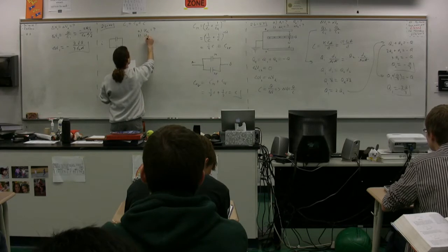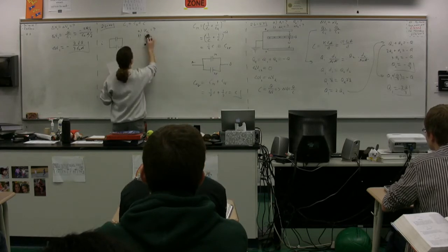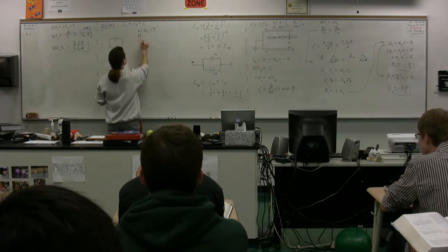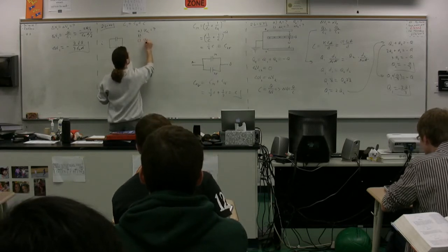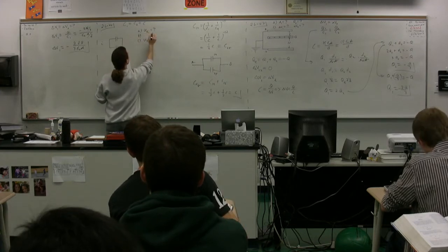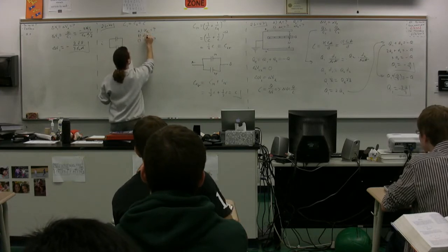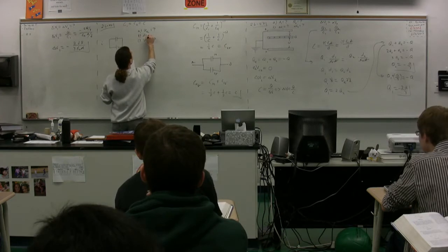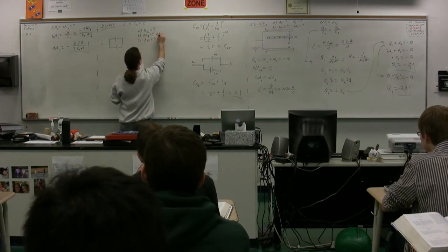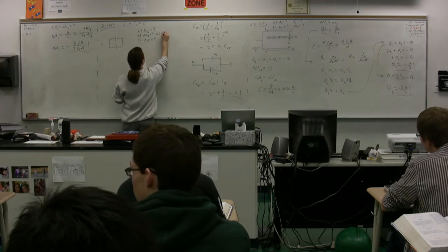Part B: find the potential difference across each capacitor after the plate separation is doubled. Part C: find the total energy of the system after the plate separation is doubled. And Part D: reconcile the difference in the answers to parts A and C with the law of conservation of energy.